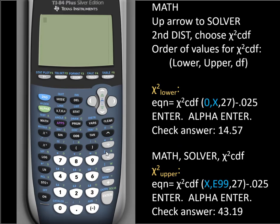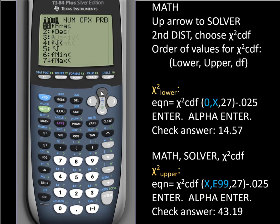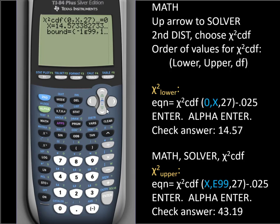In the calculator, we're going to use a combination of solver and chi-square CDF to solve. We go to the math menu, up arrow to get to the solver and choose that function. If you have something already here, you can up arrow, which will take you right into the equation solver and clear it out or work with it.